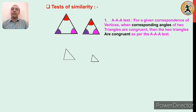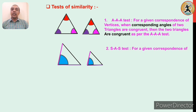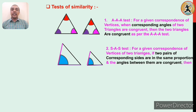Let us consider the next test. Here, again there are two triangles, and now two sides are in proportion and the angle between them is congruent to the corresponding angle. In this case, those two triangles are similar to each other by the SAS test. For a given correspondence of vertices of two triangles, if two pairs of corresponding sides are in the same proportion and the angles between them are congruent, then those two triangles will be similar as per the SAS test.